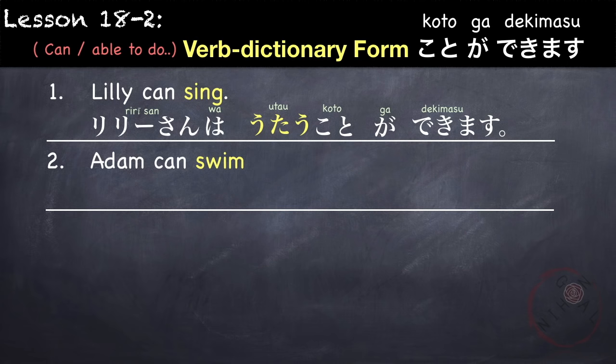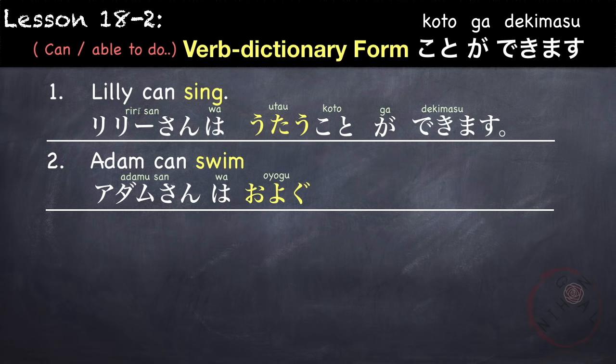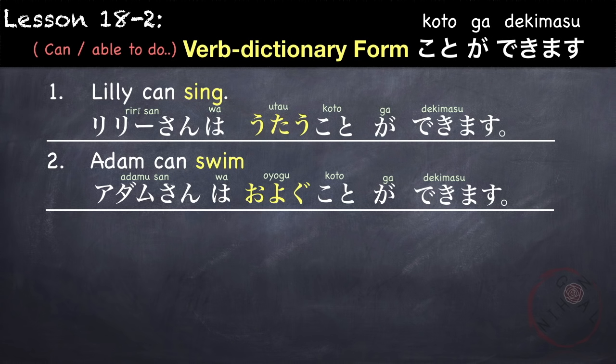Another example: Adam can swim. Our topic is Adam, so Adam-san wa. Our verb is 'swim' which is oyogimasu. In dictionary form it is oyogu, followed by koto ga dekimasu. Adam-san wa oyogu koto ga dekimasu — Adam can swim, or literally Adam is capable of swimming.